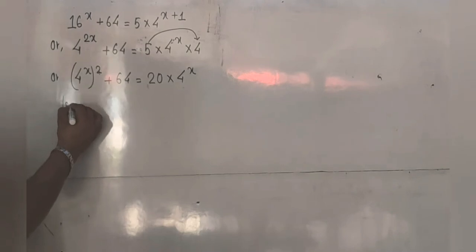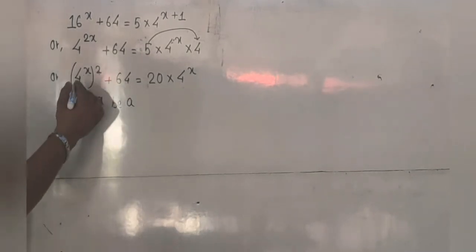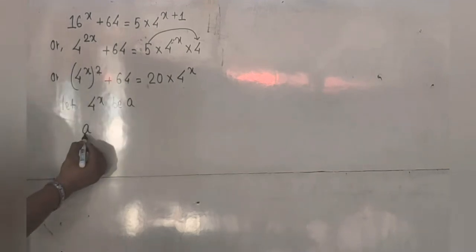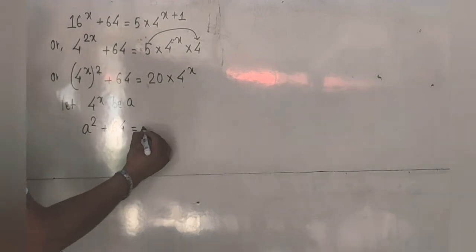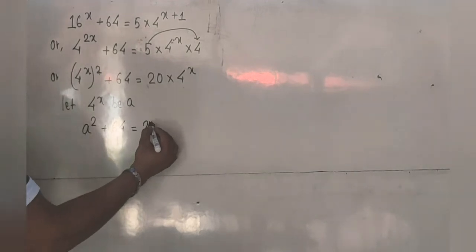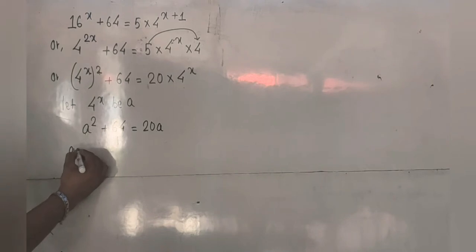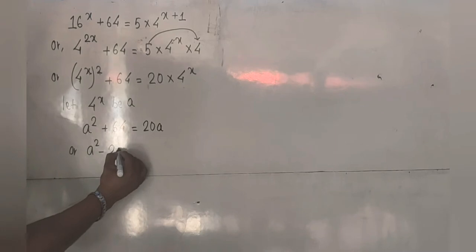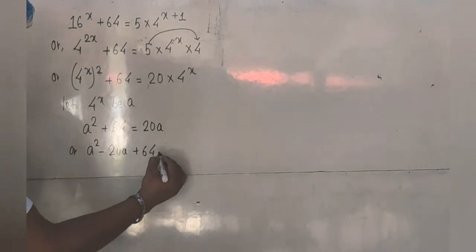Now we can suppose 4 with the power x to be a. In place of 4 power x, I can write a squared, plus 64 as it is, equals 20 into a. We have 4 with the power x written as a. Now I can arrange the terms and bring minus 20a before the equal sign, giving us a squared minus 20a plus 64 equals 0.